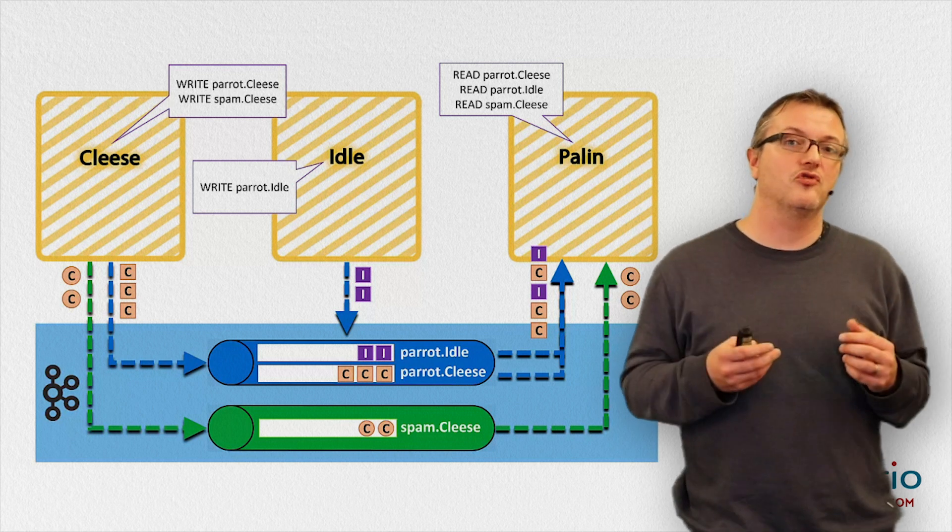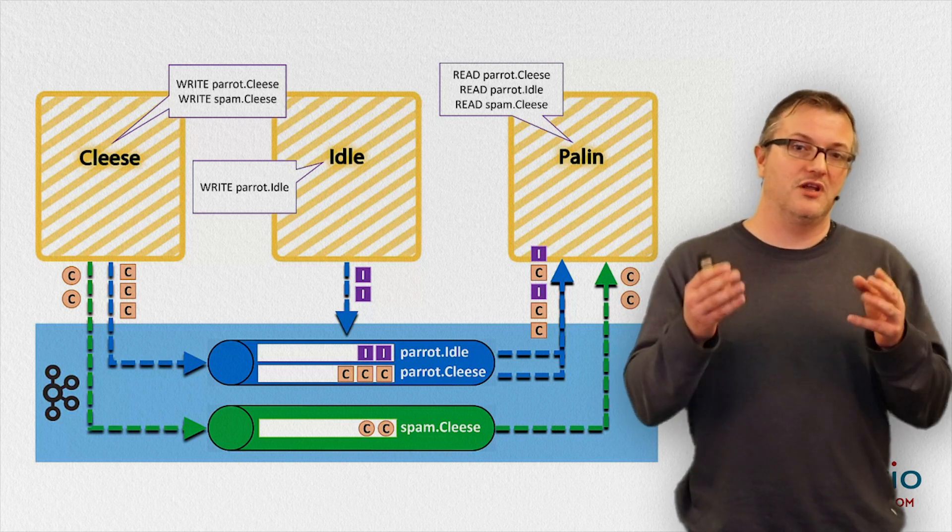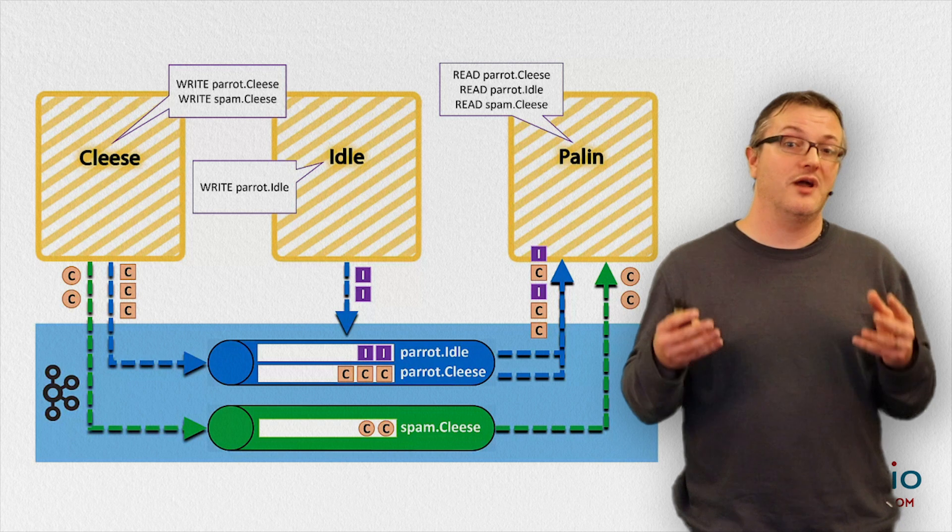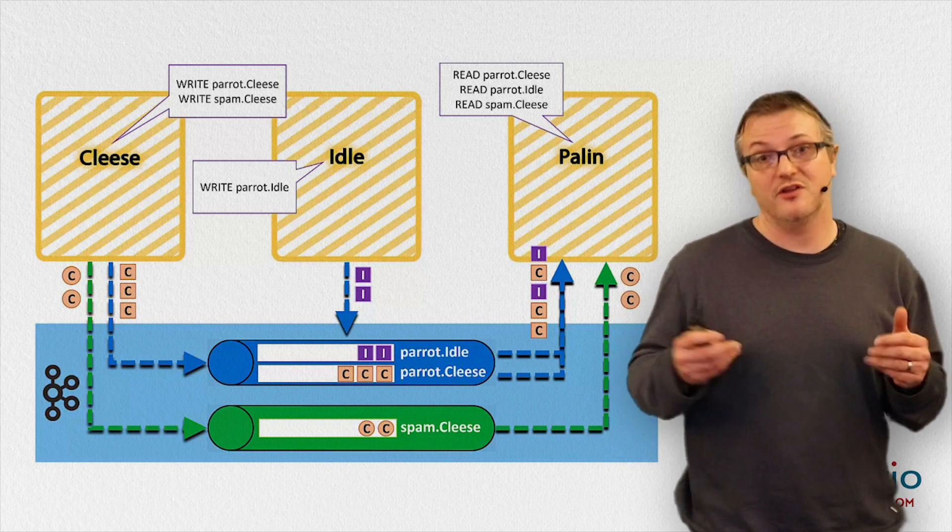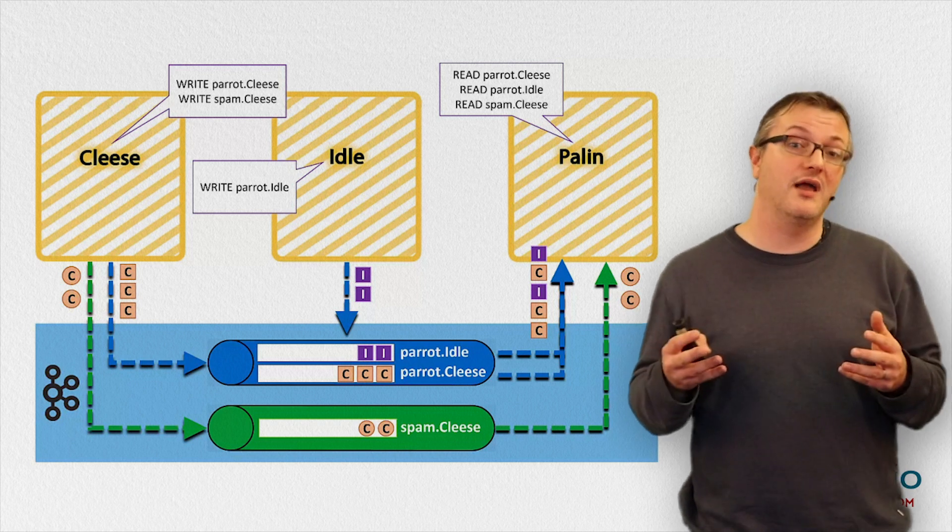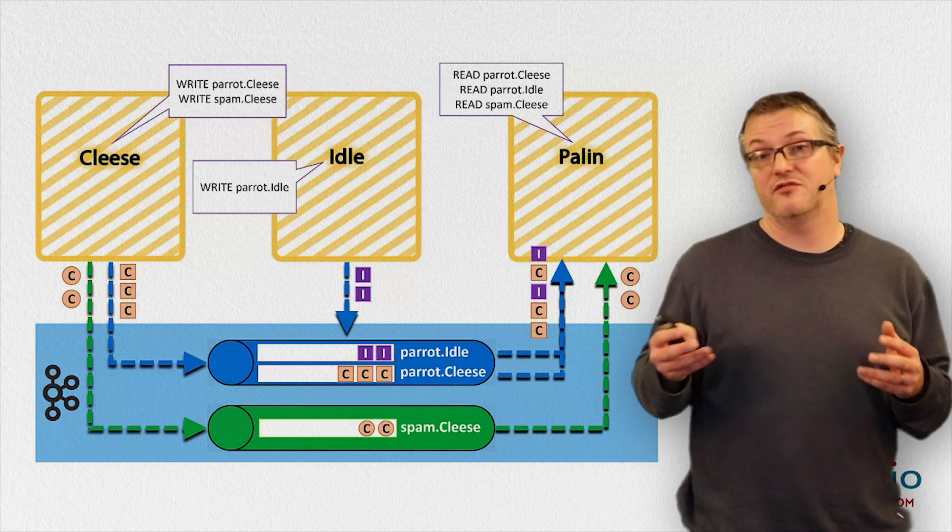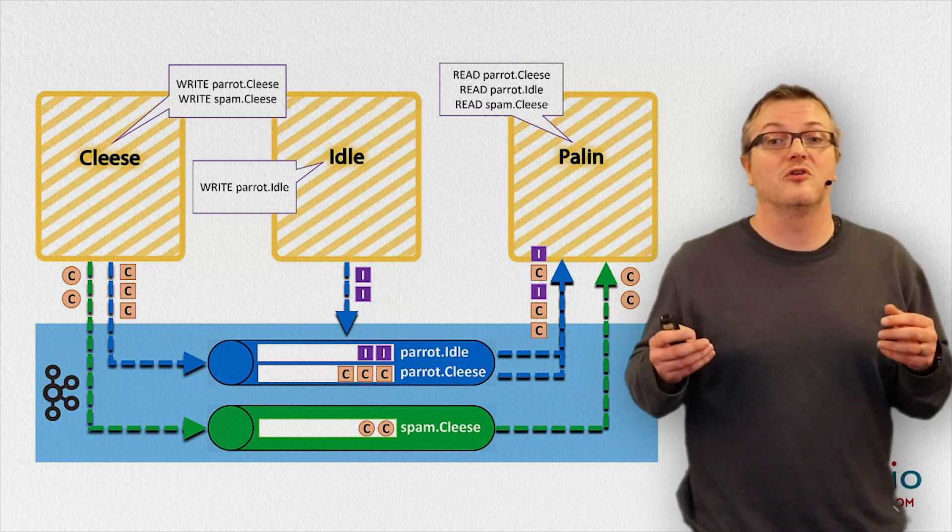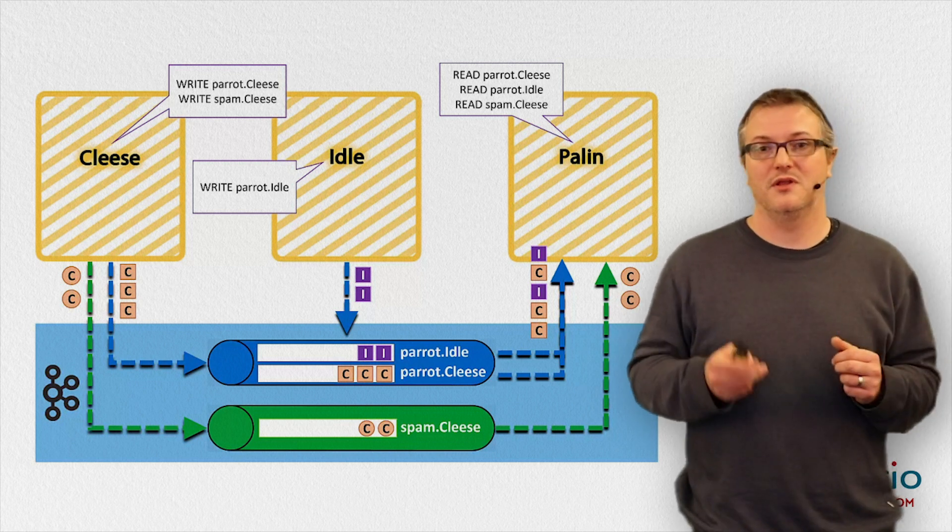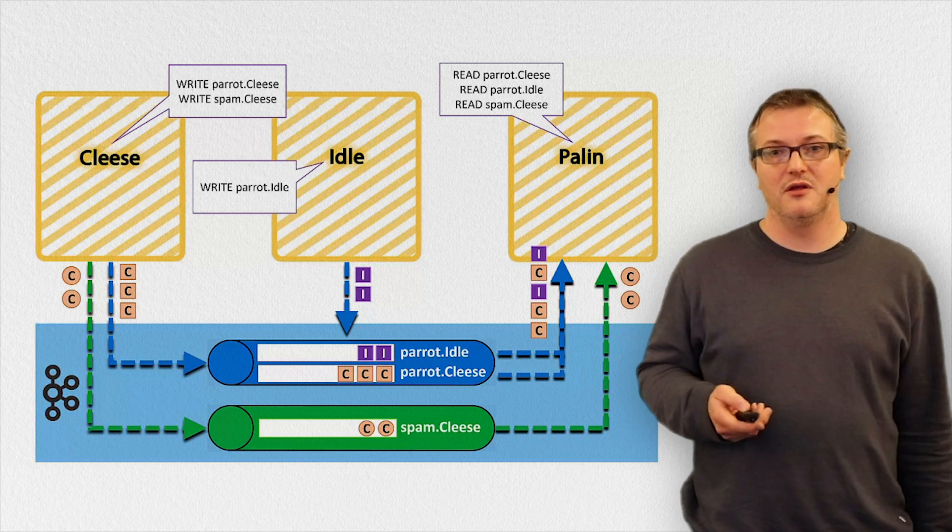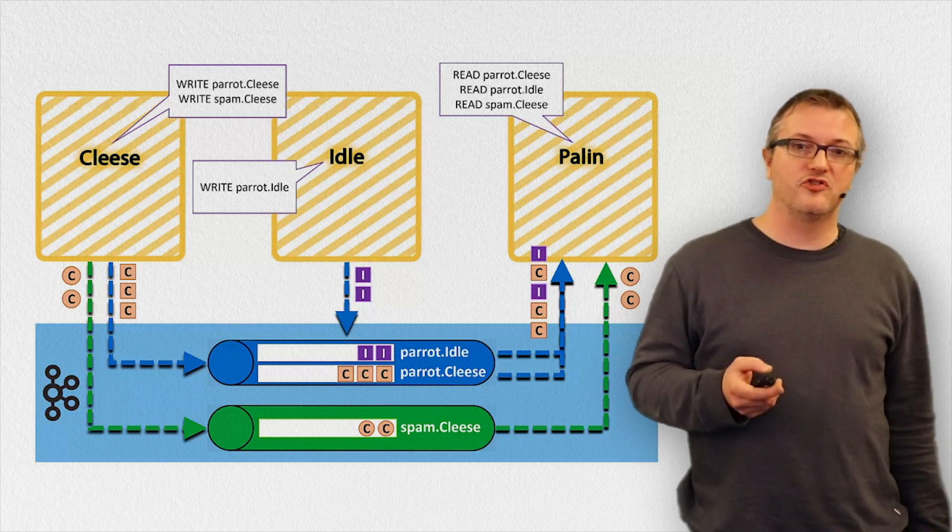And of course, we use a kind of access control system to make sure that, for example, tenant.cleese can only write to the concrete parrot.cleese and spam.cleese Kafka topics, and tenant.idle can only write to the parrot.idle Kafka topic and not to parrot.cleese or spam.cleese because he's tenant.idle, so he can't break those boundaries. Taking this yet another step further,